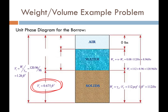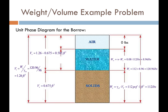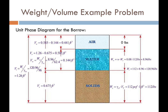For the borrow: volume of solids equals 0.675 cubic feet (same as fill). Volume of voids equals total volume minus volume of solids: 1.26 minus 0.675 equals 0.585 cubic feet. Volume of water equals weight of water divided by unit weight of water: 8.96 divided by 62.4 equals 0.144 cubic feet. Volume of air equals 0.585 minus 0.144 equals 0.441 cubic feet. Phase diagrams for both fill and borrow are now complete.